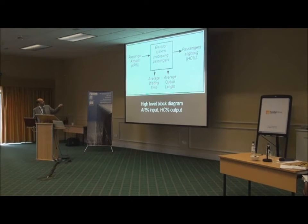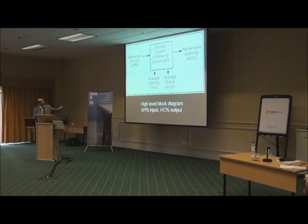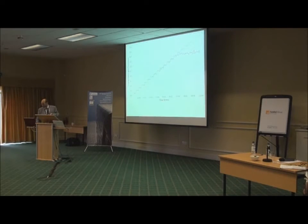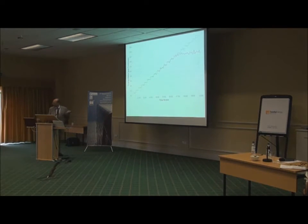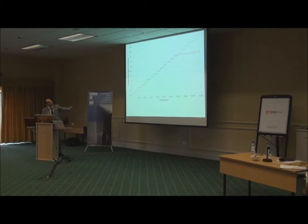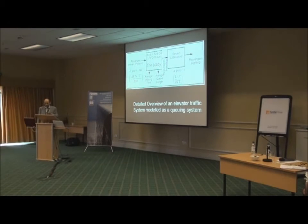For an elevator, Richard showed an interesting graph last year where he showed passengers arriving. This is a system processing passengers — we've merged the queue, the lobby, and the lift system in the same box. The output of the system is handling capacity; the input is arrival rate. He's thinking of the system as an input and an output, and ideally we'd like the input to match the output as in all control systems. It starts failing at a certain point, and it's one way of checking what the system is doing — where it's falling over, to use Adam's expression.